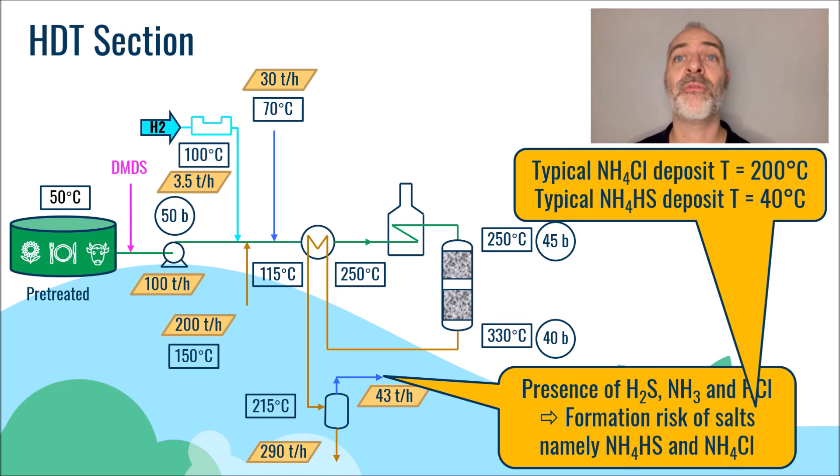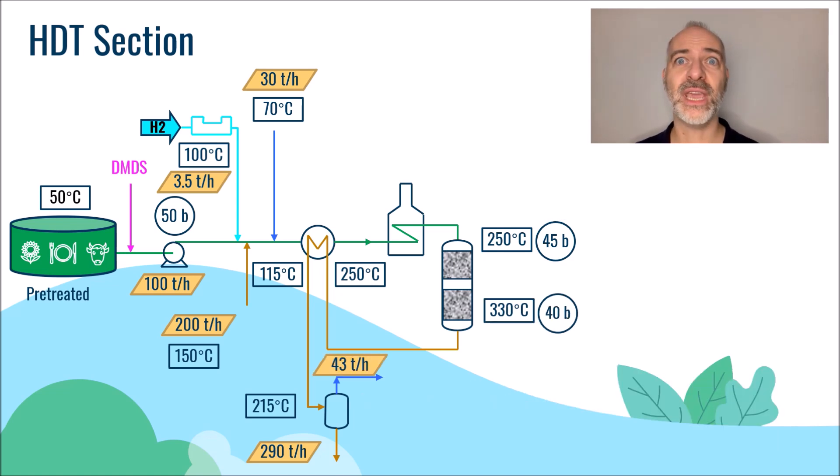To prevent these salts from forming and depositing on the equipment, we will inject water in sufficient quantity to have an aqueous phase that will solubilize these species, namely NH3, H2S, and NH4-Cl. In our case, we will typically inject about 4 tons per hour of water.